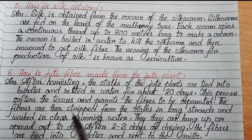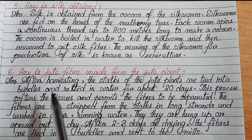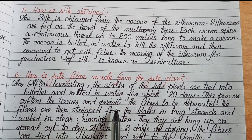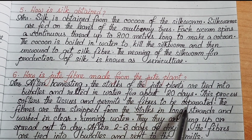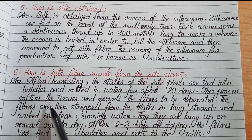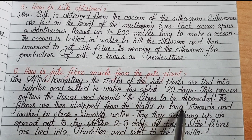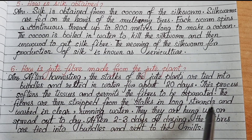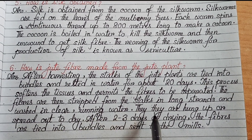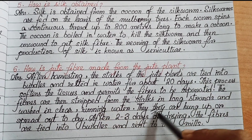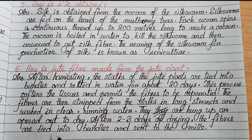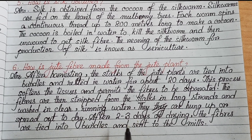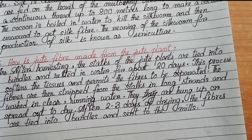Number 6: how is jute fiber made from the jute plant? After harvesting, the stalks of the jute plants are tied into bundles and retted in water for about 20 days. This process softens the tissues and permits the fibers to be separated. The fibers are then stripped from the stalks in long strands and washed in clear running water. They are hung up or spread out to dry. After 2–3 days of drying, the fibers are tied into bundles and sent to the mills.